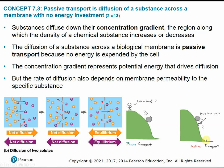Whereas active transport would be the opposite — going uphill or against that gradient, requiring energy, like paddling upstream or pedaling a bike up a hill. The concentration gradient represents potential energy that drives diffusion — essentially the hill we're going to roll down. The steeper or greater the difference in concentrations, the steeper the gradient, and the faster diffusion can occur.